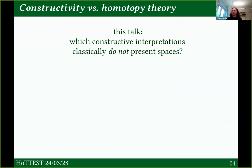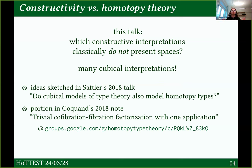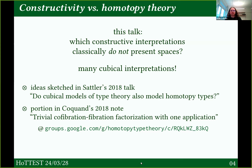This talk is not about those good things — it's about bad things. This talk is about constructive interpretations that classically don't present spaces. It turns out that many of the cubical interpretations that people came up with when they started doing this don't present spaces. I'm not really announcing new work here — you may have heard about it before. The ideas were sketched in Christian's talk in 2018, 'Cubical models of type theory also model homotopy types,' and a bit of the argument appears in a note that Thierry posted to the homotopy type theory Google group in 2018.